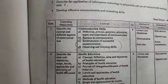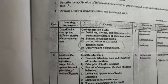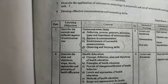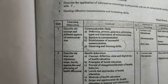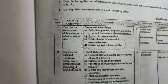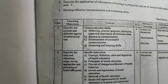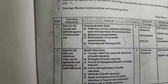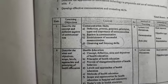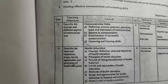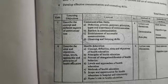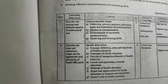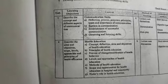In Unit 1 on Communication Skills: Part A covers definition of communication, process, purpose, principles, types, and importance of communication skill. Part B covers barriers of communication. Part C covers establishment of successful communication. Part D covers observing and listening skills.